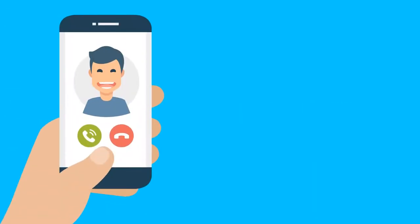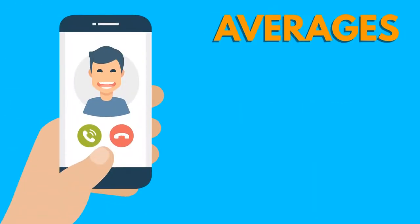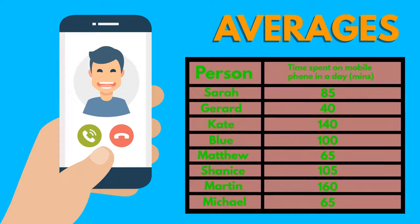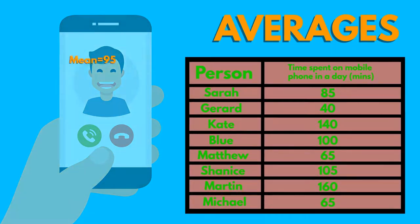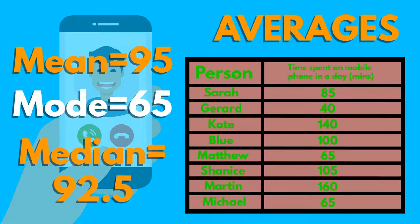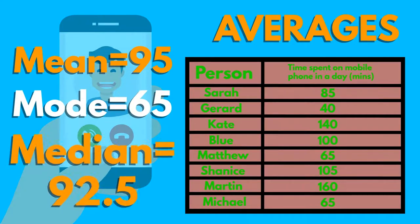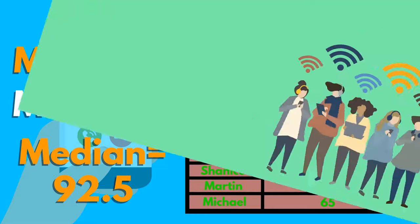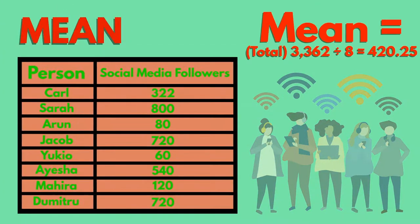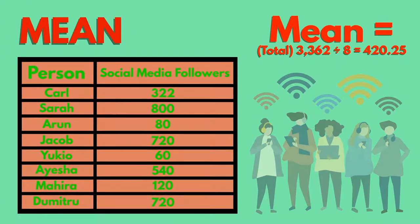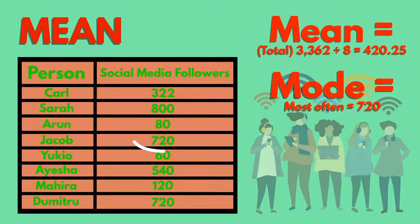To interpret our data, we can use averages to represent it and to help us discover trends. Averages can be represented in a variety of ways, giving us useful tools for data analysis. You've probably heard of these types already: the mean, mode and median. The mean of a set of values is the sum of those values divided by the number of pieces of data. The mode is the piece of data that appears most often.